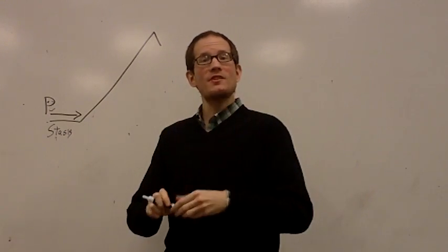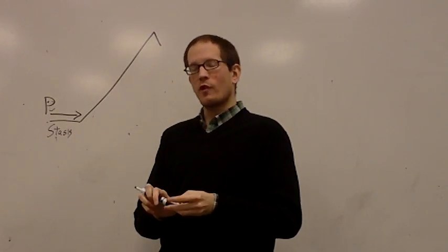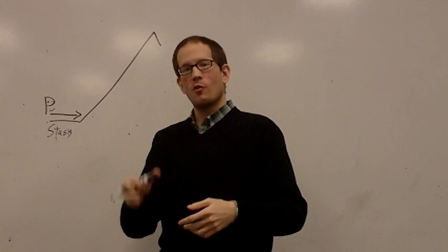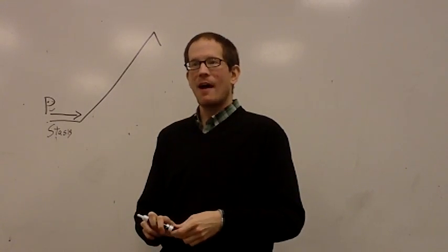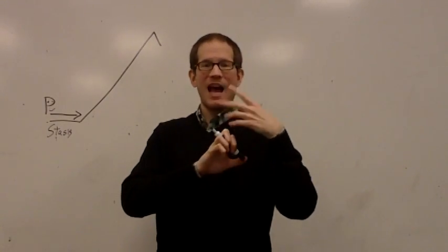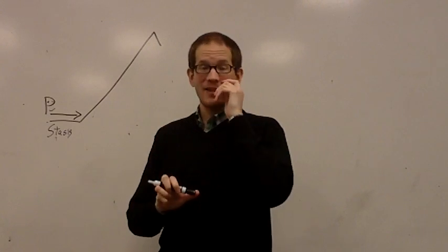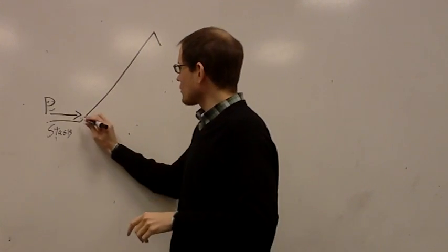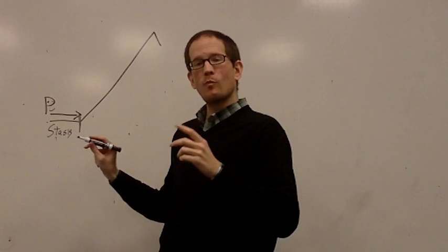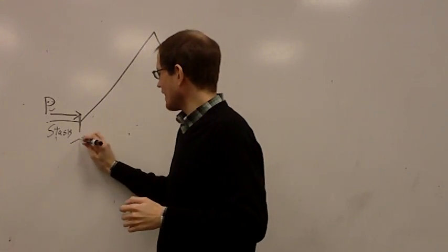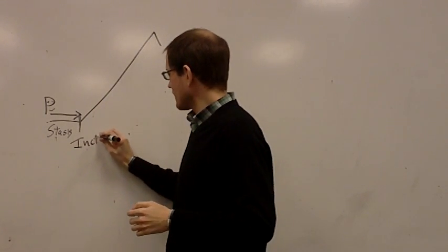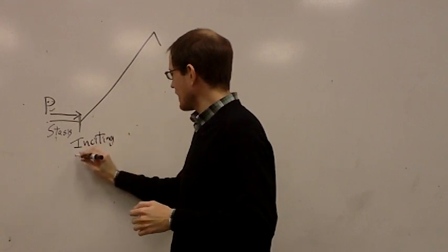We call this part the stasis, because it's stable. Not too much is happening. During that time, we get to know the characters, we get to know the world. We have exposition, where we set up what's happened beforehand. But the plot hasn't really started yet. The plot starts here. And we call this moment the inciting incident.